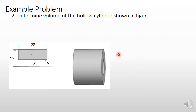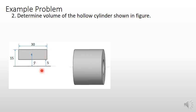Now the second example problem: determine the volume of the hollow cylinder as shown in the figure. This is the rectangle where the inner distance is 5 and the outer distance is 15, so the thickness is 15 minus 5, that is 10. The length of this rectangle is given as 30. To determine volume, area is replaced by volume and length is replaced by area in the equation.